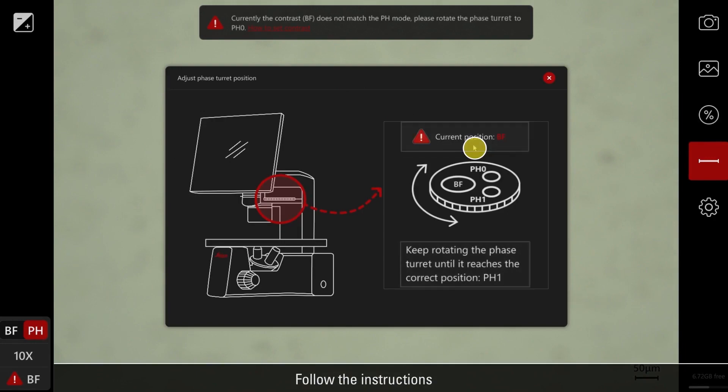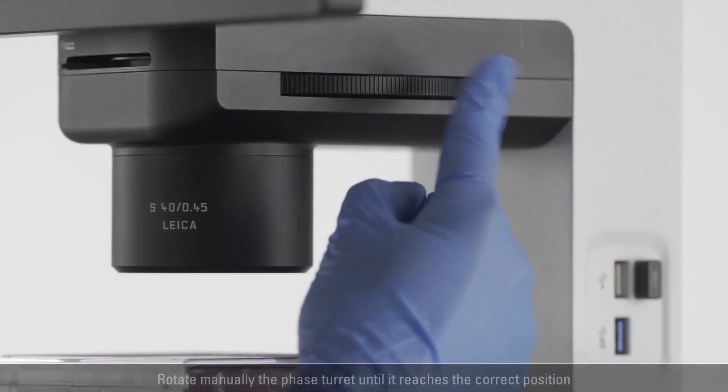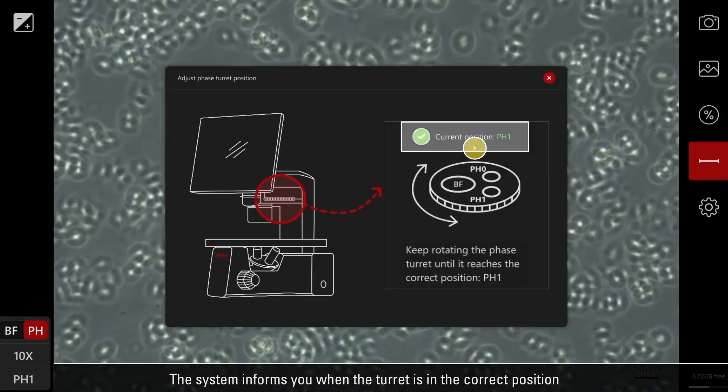Follow the instructions. Rotate manually the phase turret until it reaches the correct position. The system informs you when the turret is in the correct position.